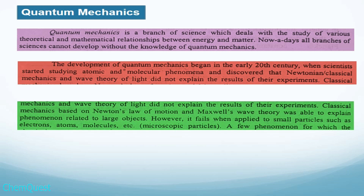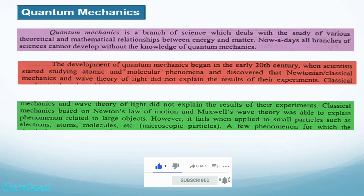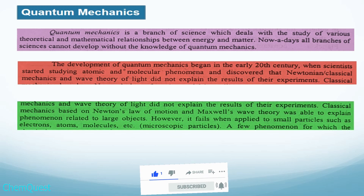Classical mechanics failed to explain these theories and phenomena because it was based on Newton's laws of motion and Maxwell's wave theory. It was able to explain phenomena associated with large or huge bodies like planets in the solar system, but the phenomena associated with small particles like electrons, atoms, and molecules could not be explained.